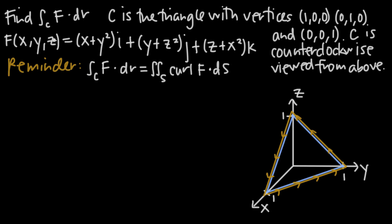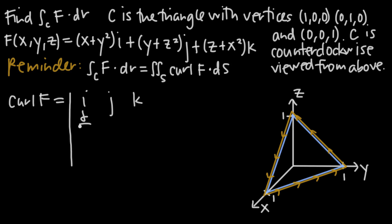We need to find the curl of the vector field f. Using the 3×3 determinant with i, j, k in the first row; ∂/∂x, ∂/∂y, ∂/∂z in the second row; and the components of f — (x + y², y + z², z + x²) — in the third row. For i: ∂(z + x²)/∂y − ∂(y + z²)/∂z = 0 − 2z = −2z. For j: −[∂(z + x²)/∂x − ∂(x + y²)/∂z] = −(2x − 0) = −2x. For k: ∂(y + z²)/∂x − ∂(x + y²)/∂y = 0 − 2y = −2y.